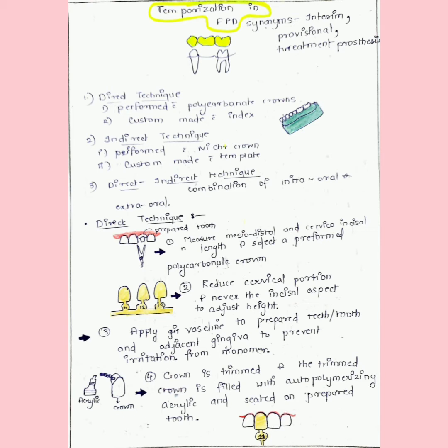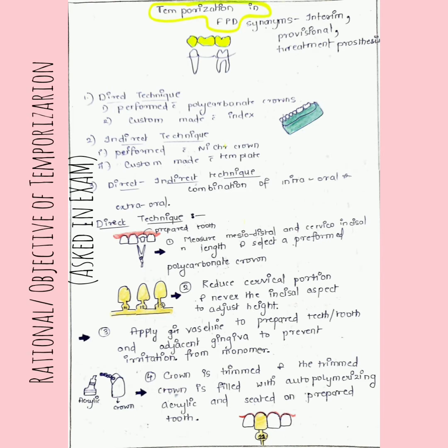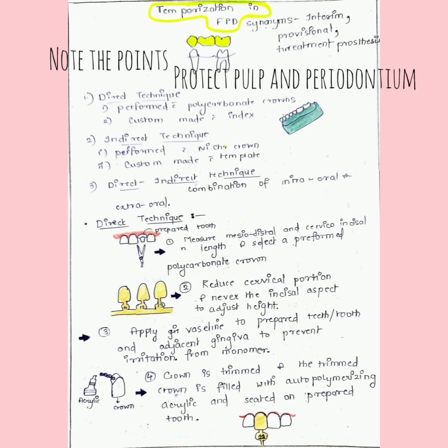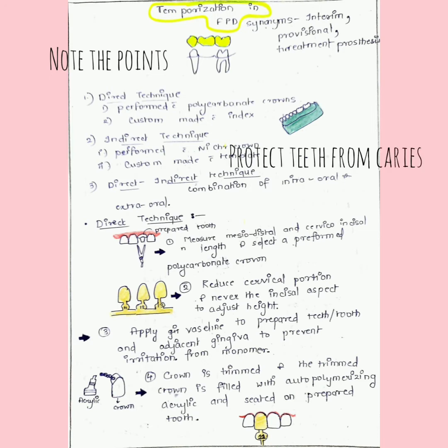Now, why do we need to give a provisional restoration before the definitive restoration? Why can't we wait? Because if we wait, that will lead to bad oral hygiene. We want to protect the pulp and periodontium, protect teeth from caries. We cannot just keep space for the pontic and leave the prepared abutment as it is.